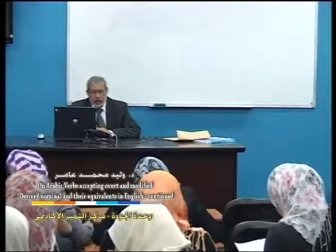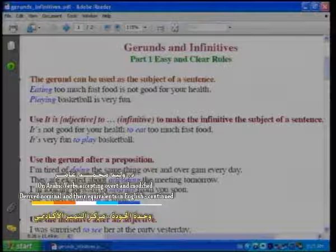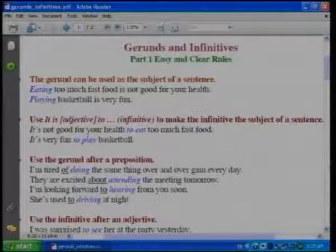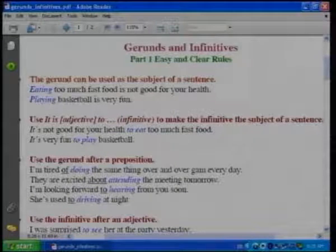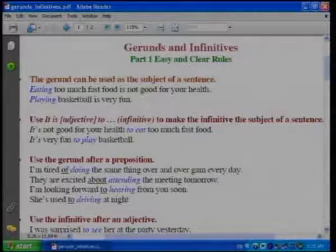Today we are going to continue with infinitive and gerund in English, plus covert and overt derived nominal in Arabic. Regarding the gerund and infinitive in English, we see that the gerund can stand as a subject in the sentence. For example: 'Eating too much food is not good for your health' and 'Playing basketball is very fun' — eating and playing stand as subjects.